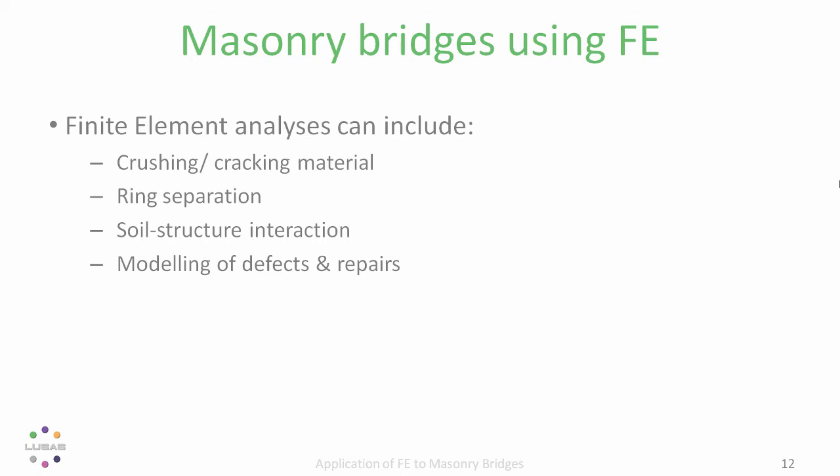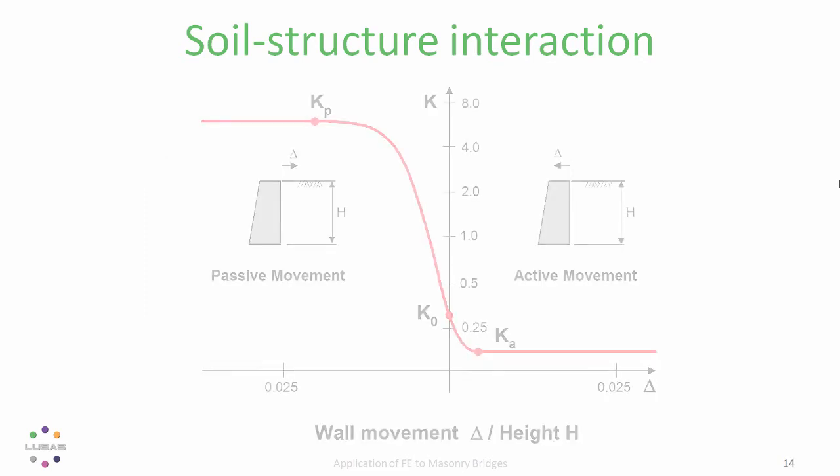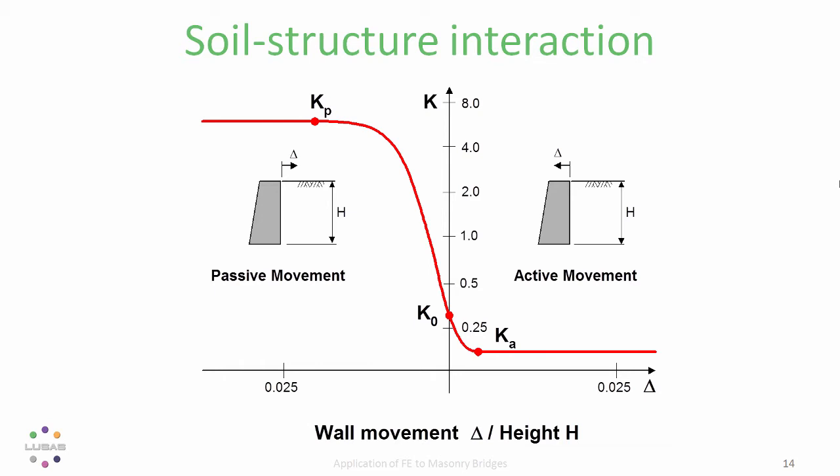Now, some structural engineers tend to think in terms of representing the soil as a load only. And we would assume active pressure in some regions and passive pressure in other regions. The stiffness of the soil doesn't come into that. But of course, in real life, it's more complex. As the structure moves away from the soil, the earth pressures reduce from the at rest pressure, towards the limiting active pressure, Ka.